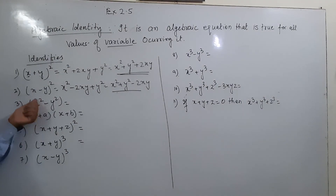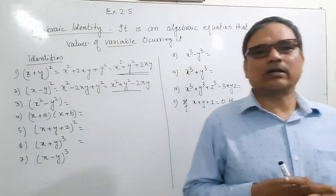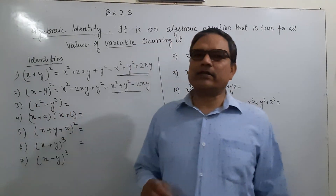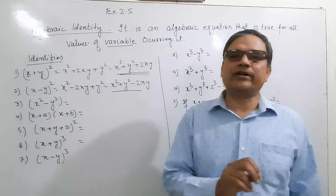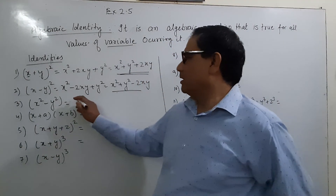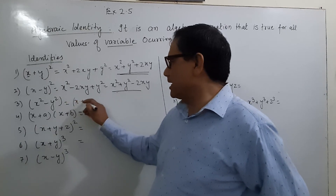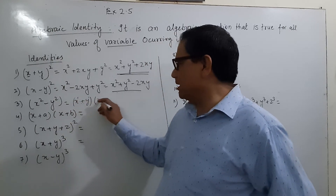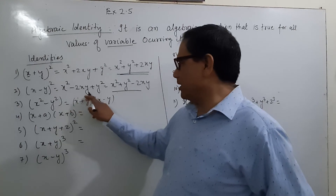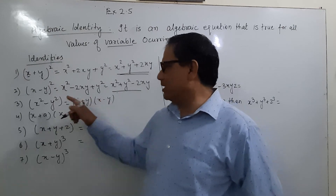Now for x² − y², this is the difference of squares of two variables. This identity can be written in factored form: x² − y² = (x+y)(x−y). The degree 2 is reduced to degree 1 in each factor — one factor with plus and one with minus.